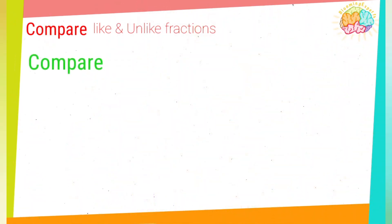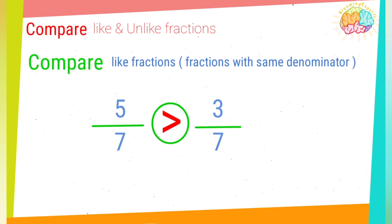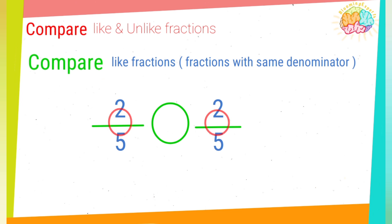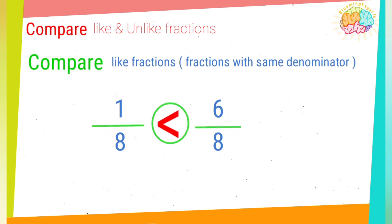Let's compare like fractions. To compare fractions with the same denominators, compare their numerators. The numerator indicates whether the fraction is greater than, equal to, or less than the other. Here, six is greater than one, so six over eight is greater than one over eight.